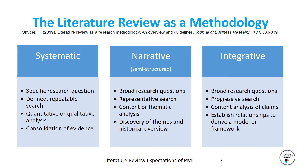Little consensus exists about the different types of literature reviews that can be used as a methodology. We will use the structure provided by Schneider in the Journal of Business Research. The systematic review appears at one end of a spectrum. Systematic reviews seek specific answers to a research question; they use a defined, repeatable search method. They can use quantitative or qualitative analysis depending upon the nature of the articles collected. A meta-analysis is an example of a quantitative approach, whereas a consolidation of evidence is usually conducted for the qualitative approach.